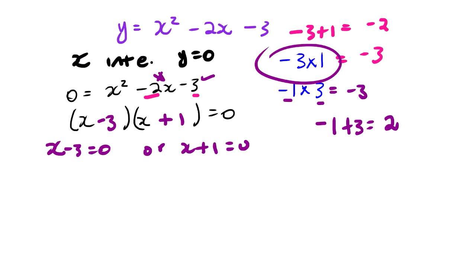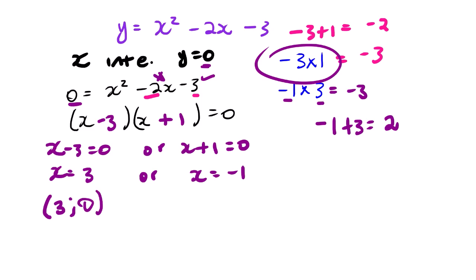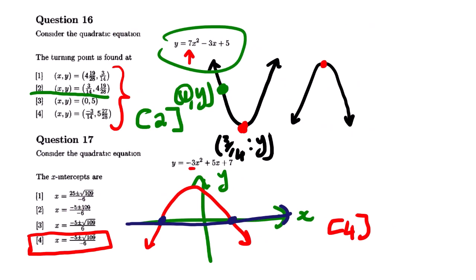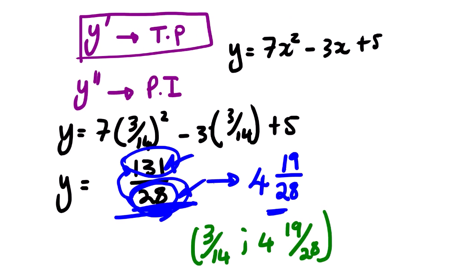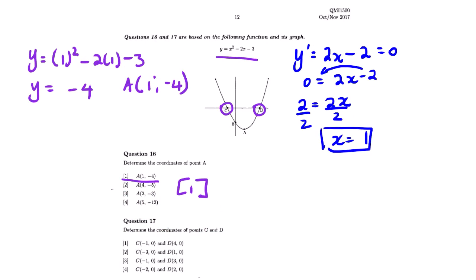From the factored form, we solve: x + 1 = 0 gives x = −1, and x − 3 = 0 gives x = 3. So the x-intercepts are (3, 0) and (−1, 0). Looking at our options, option 3 is the correct answer.